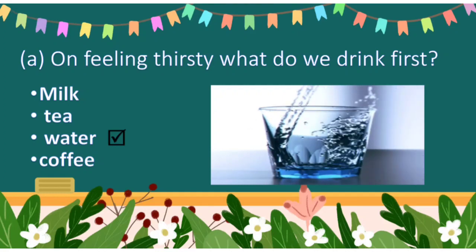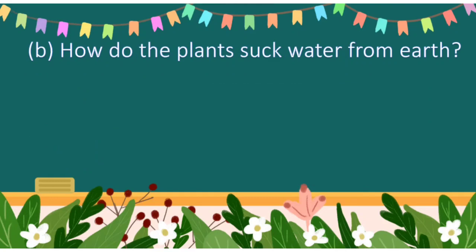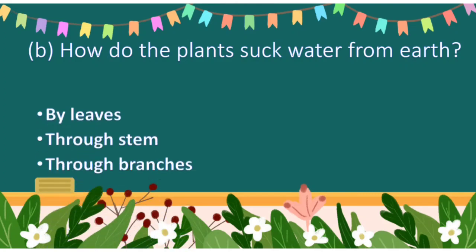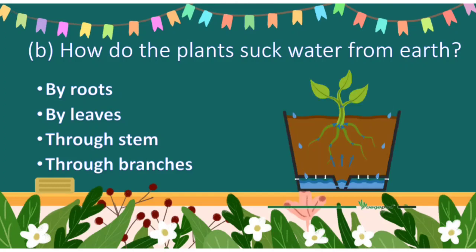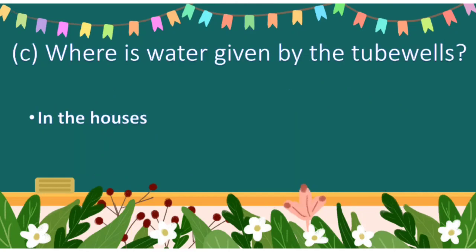Now the next question: how do the plants suck water from earth? Can you tell me? Let's see the options first. The options are: by leaves, through stem, through branches, or by roots. Yes children, very good — by roots. We will put a tick mark in front of that option.